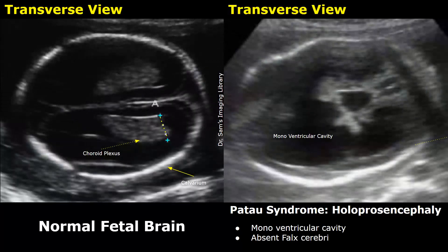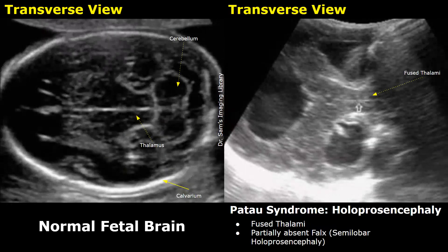This is another image showing a monoventricular cavity with absent falx cerebri. Only a small, abnormally formed brain tissue is present. This appearance indicates alobar holoprosencephaly. This other image is of semilobar holoprosencephaly. There is partial separation of the ventricles. You can see some brain tissue, but anteriorly you will find fused thalami. The falx cerebri is partially absent — only a small part of the falx cerebri is present between the thalami.